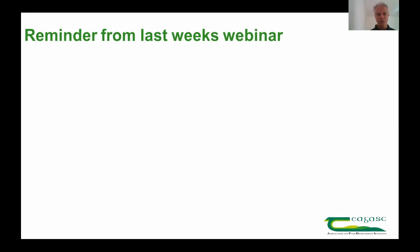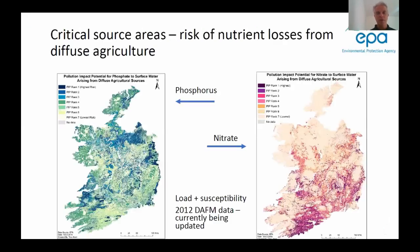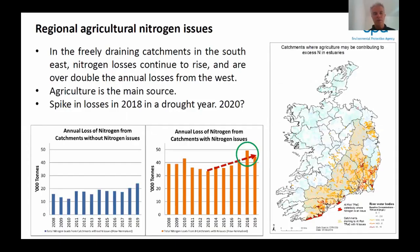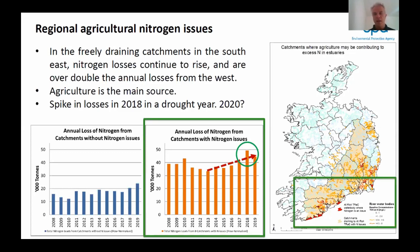Before we get started, I'd like to remind you of what you heard last week from Jenny Deakin in the EPA. On the right hand side you'll see that the EPA have highlighted areas at risk from nitrate, and that risk increases as you move from northwest to southeast as indicated by the darker colorations. The EPA have noted an increasing trend in nitrate concentrations at the catchment level, with many water bodies in the south and east having eutrophic estuaries where nitrogen has been highlighted as a particular issue for water quality.